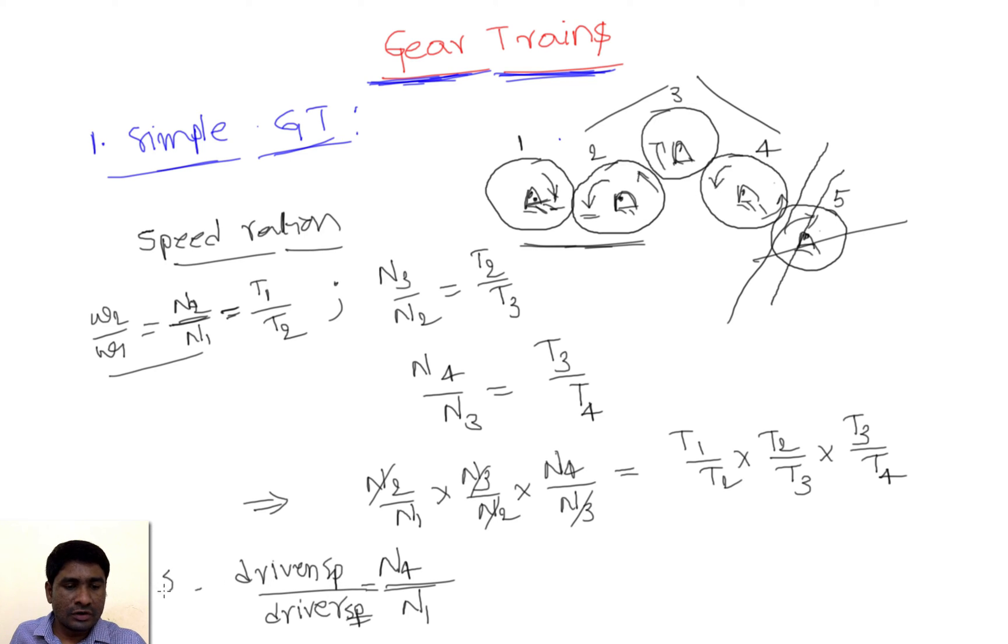This is the speed ratio. So what is this value? Speed ratio equals—we will get the speed ratio in terms of the number of teeth. Here also, this will get cancelled and this will get cancelled, so we will get t1 by t4.